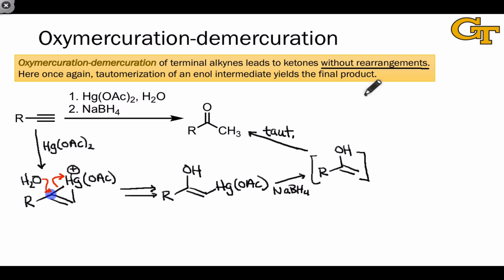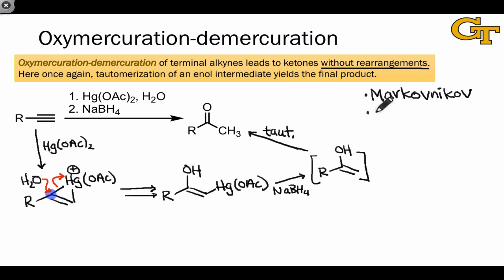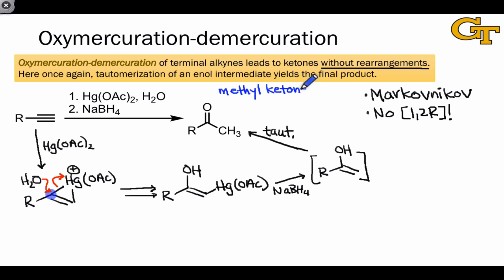Keys to oxymercuration are that it occurs with Markovnikov selectivity, largely because it goes by a type-2 mechanism involving a cyclic intermediate and selective SN2 at the more substituted position — just like in an alkene context — and it occurs without 1,2-rearrangements, since an open carbocation is never actually formed in this mechanism. The products of the reaction are methyl ketones containing a CH3 group linked to a C=O group, and this amounts to Markovnikov selectivity with the nucleophilic oxygen atom linked to the more substituted carbon of the original alkyne.